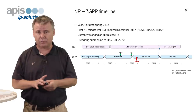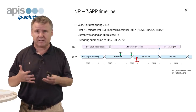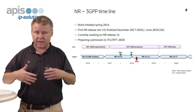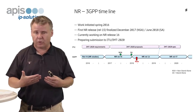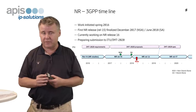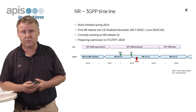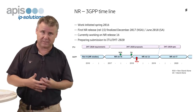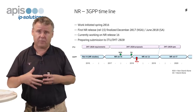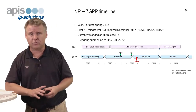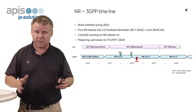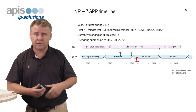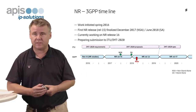That first release was limited to so-called non-standalone operation, meaning that the operator has to operate NR together with LTE — devices communicate with both LTE and NR at the same time; NR cannot operate as a completely standalone system. Then during the summer, in June this year, the standalone version of NR was also completed, making it possible to deploy NR as a completely standalone system. We have now concluded the first release of NR. There are still small things to fix — as always — but the main focus in 3GPP is now moving toward NR Release 16, the next release.